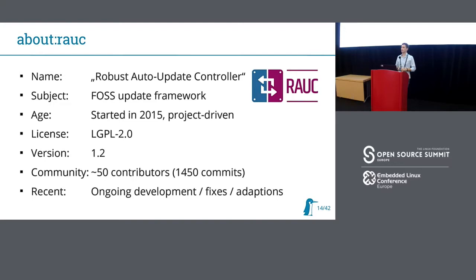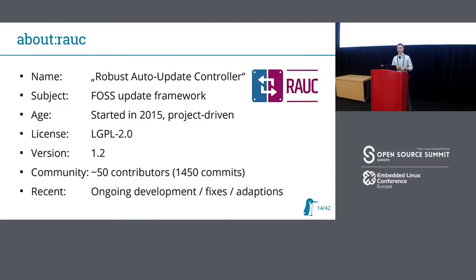Nowadays we're at RAUC version 1.2, released just two days before this talk. RAUC is licensed under LGPL version 2, which allows you to freely use it in your project, also potentially as a library. We have a steadily growing community of now about 50 contributors who in total made 1,450 patches. Despite RAUC working well, there's still ongoing development — we fix things, adapt to new technologies, and add new features required for new storage scenarios.